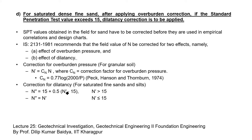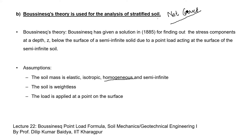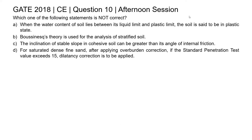The final corrected SPT N value is equal to 15 + 0.5 × (N' − 15), where N' is the corrected N value after overburden pressure correction. The dilatancy correction is only needed when N' is greater than 15. The statement says if the standard penetration test value exceeds 15, dilatancy correction is to be applied — so option D is correct. To summarize: option A is correct, option B is the incorrect statement, option C is correct, and option D is correct. Therefore, option B is the correct answer for this question.